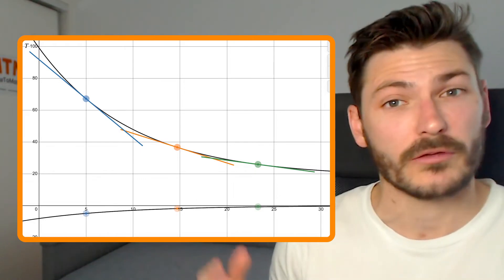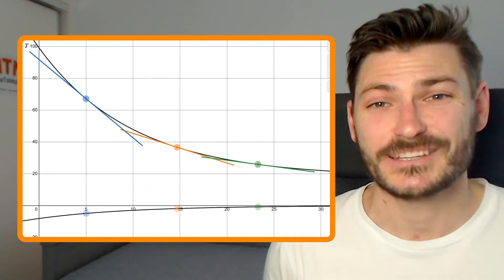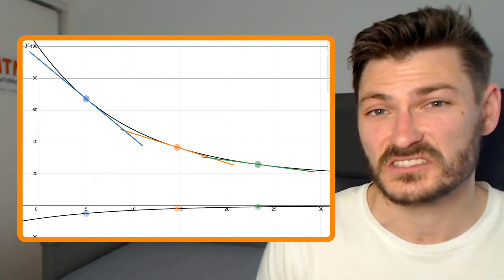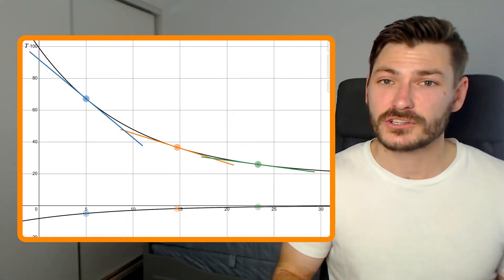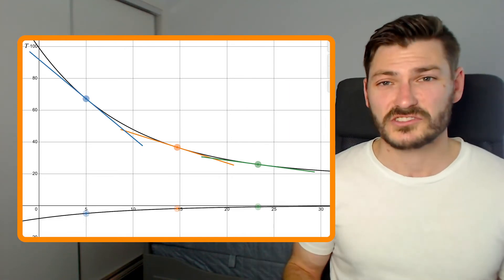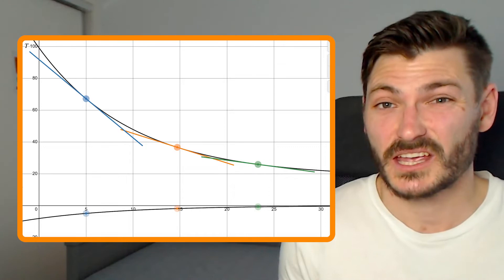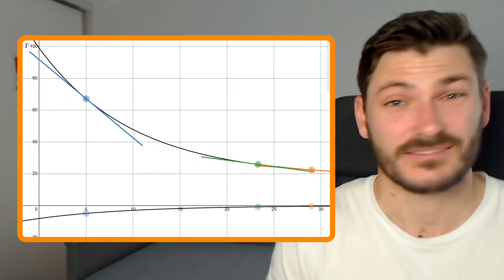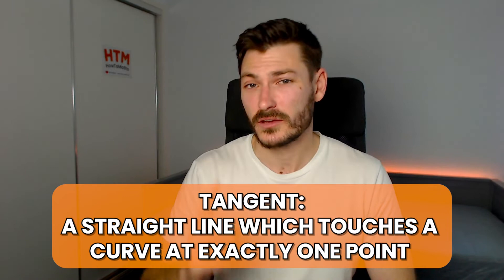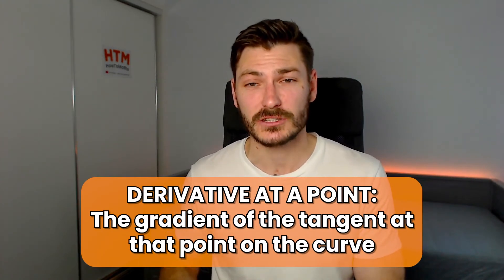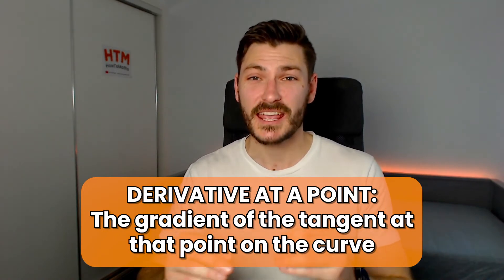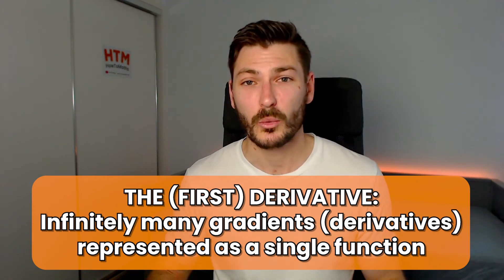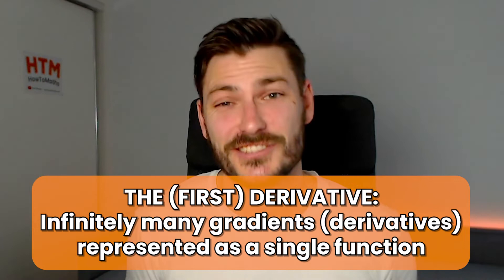Finding the derivative — going from some function to its derivative function — is a process called differentiation. This concept of a derivative function is essentially saying: find a curve which will represent any possible gradient value of any tangent on the original curve. To summarize: a tangent to a curve is a straight line which touches the curve at exactly one point. The gradient of this tangent line is the derivative at that point. If we take infinitely many derivatives across the entire function, we get what's called the derivative function, or simply the derivative. If you're asked to calculate a derivative, this is what it's talking about.